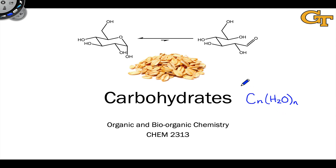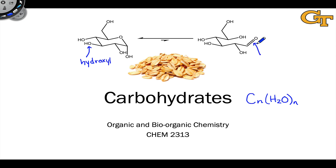In addition, we can think about the structure and reactivity of carbohydrates in terms of functional groups we've seen before, such as alcohols and the hydroxyl group. All carbohydrates contain at least one hydroxyl group. Additionally, all carbohydrates in at least one of their isomeric forms contain a carbonyl group — a ketone or aldehyde. And so we can understand the structure, properties, and reactivity of carbohydrates in terms of these functional groups that we've seen before.